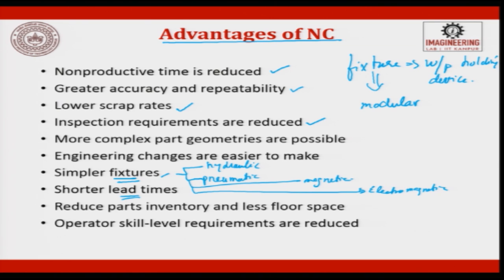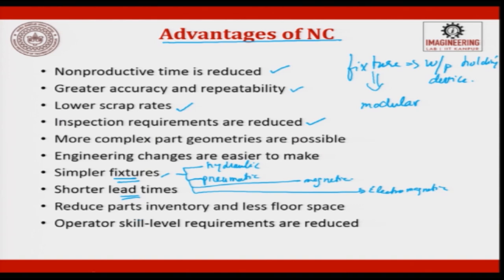NC machines shorten lead time — once the CAD is ready, the program gets ready and the part is executed. What used to require 6-7 machines can now be done in one machine, reducing inventory between machines and reducing floor space. Operator skill level requirements are also reduced: since operations are pneumatically and hydraulically controlled and inbuilt, a highly skilled operator is no longer needed to achieve micron-level accuracy for complex parts.